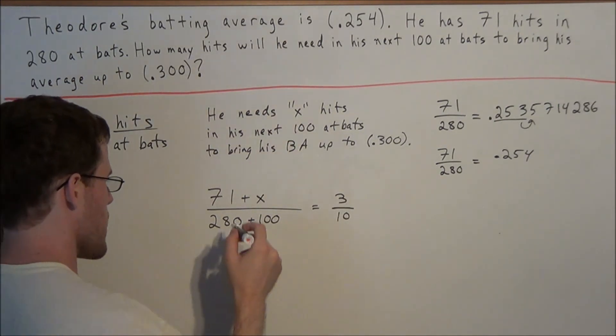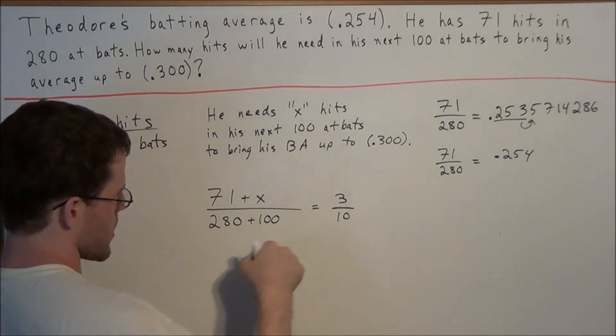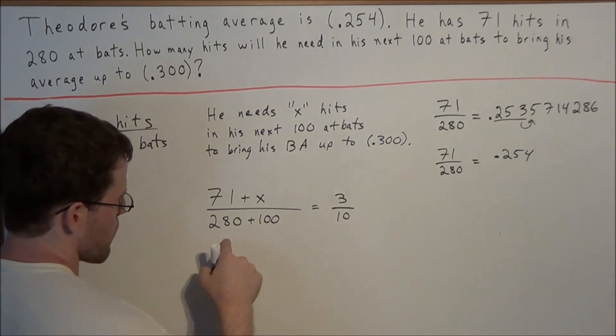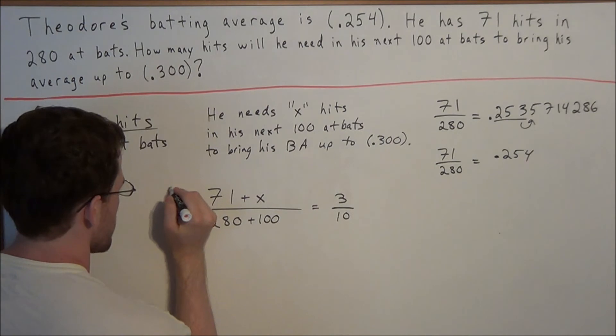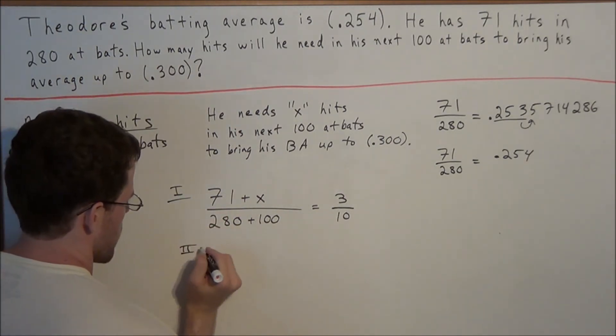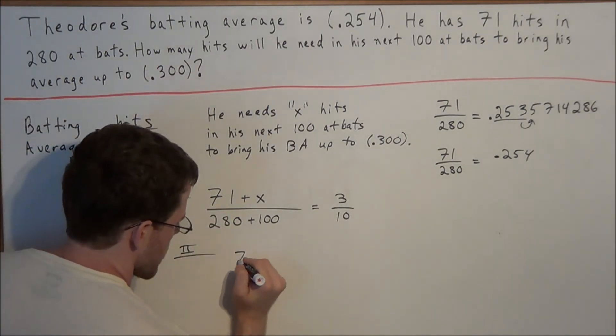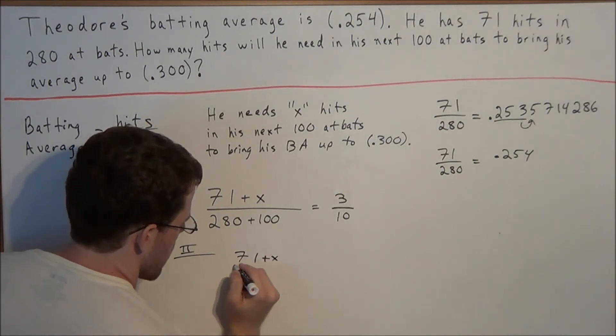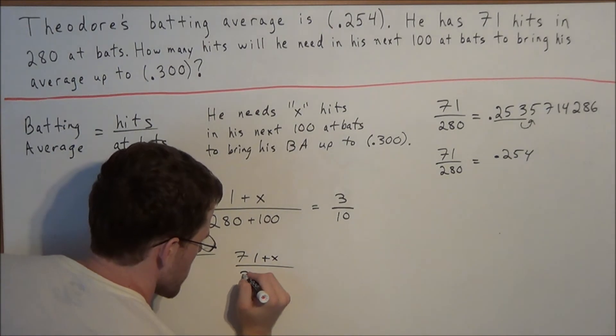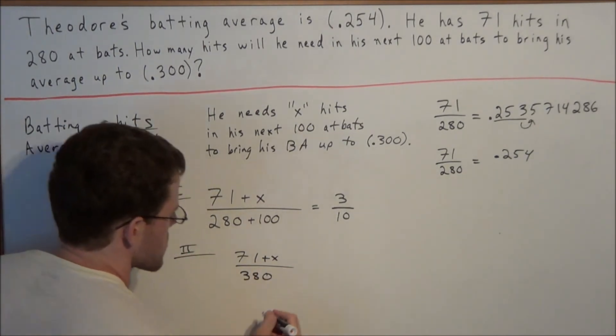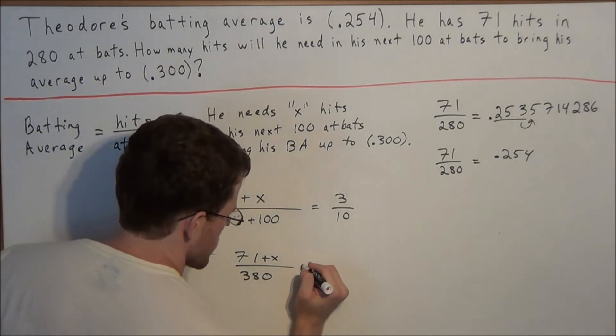So now to solve this problem, for the next line, let's simplify. We can simplify 280 plus 100. So now we have, we'll call this line 1 with Roman numeral 1. For line 2, he has 71 plus x over, and now 280 plus 100 is 380. So 71 plus x over 380 is equal to 3 over 10.